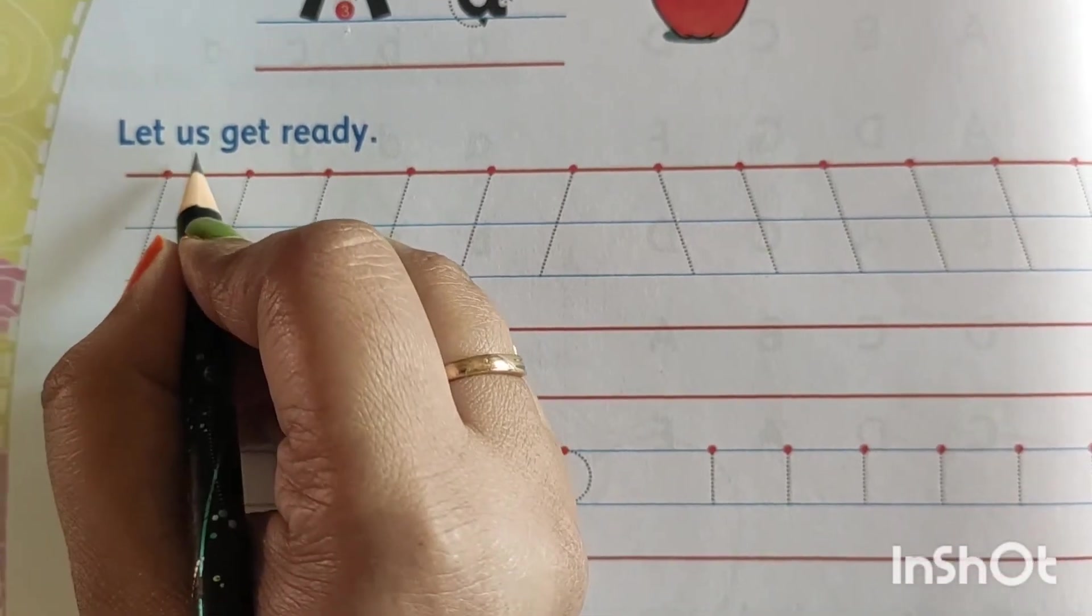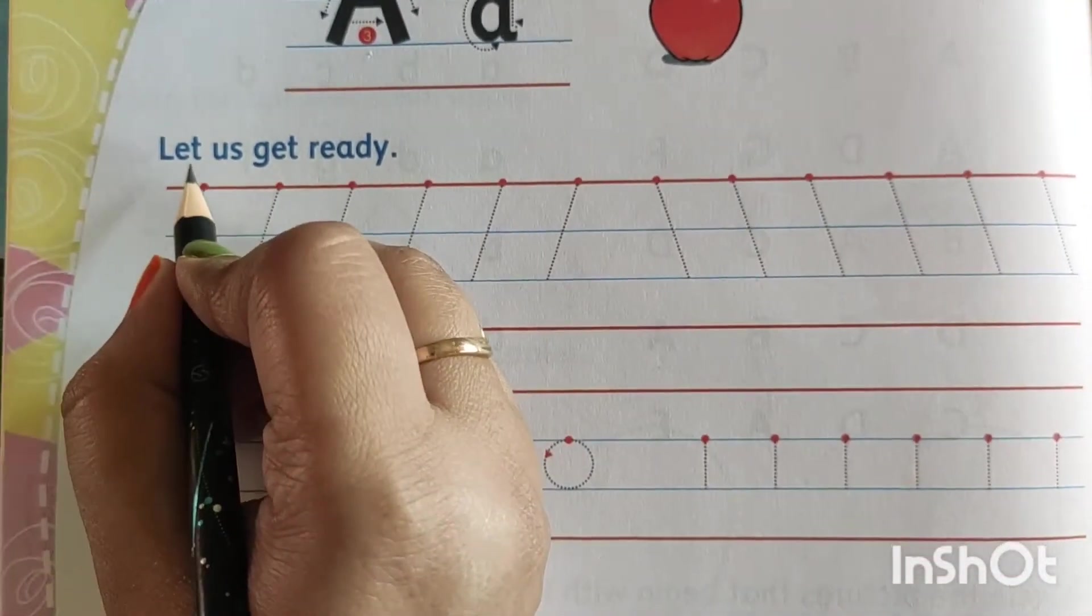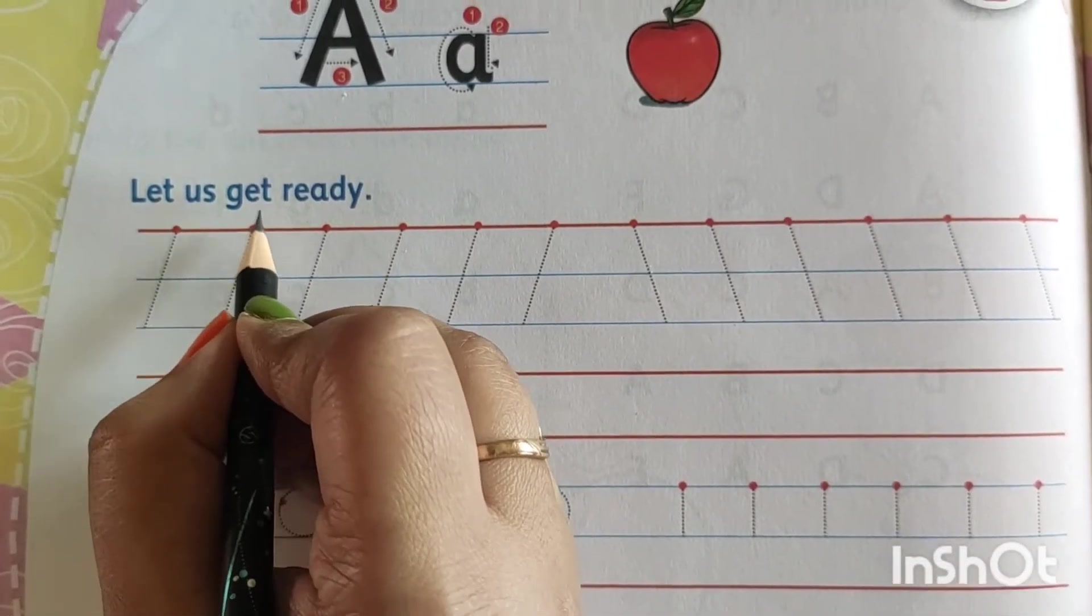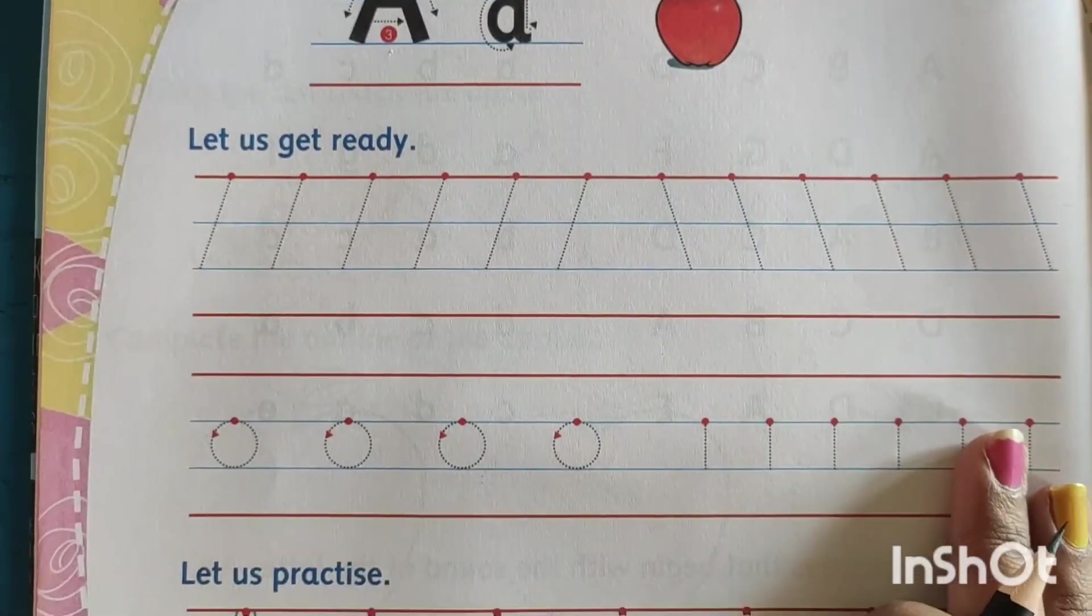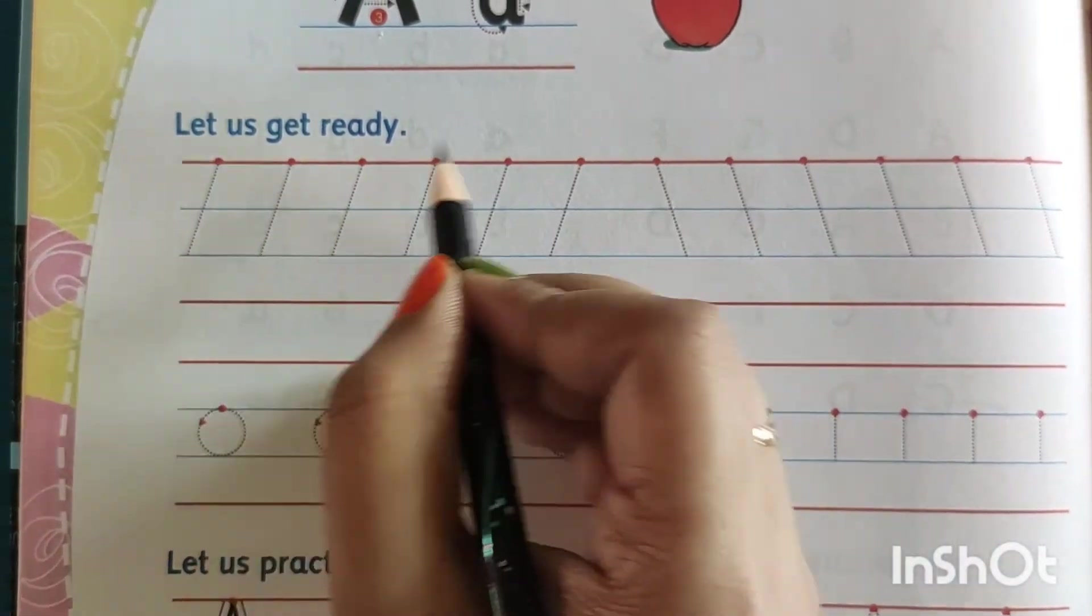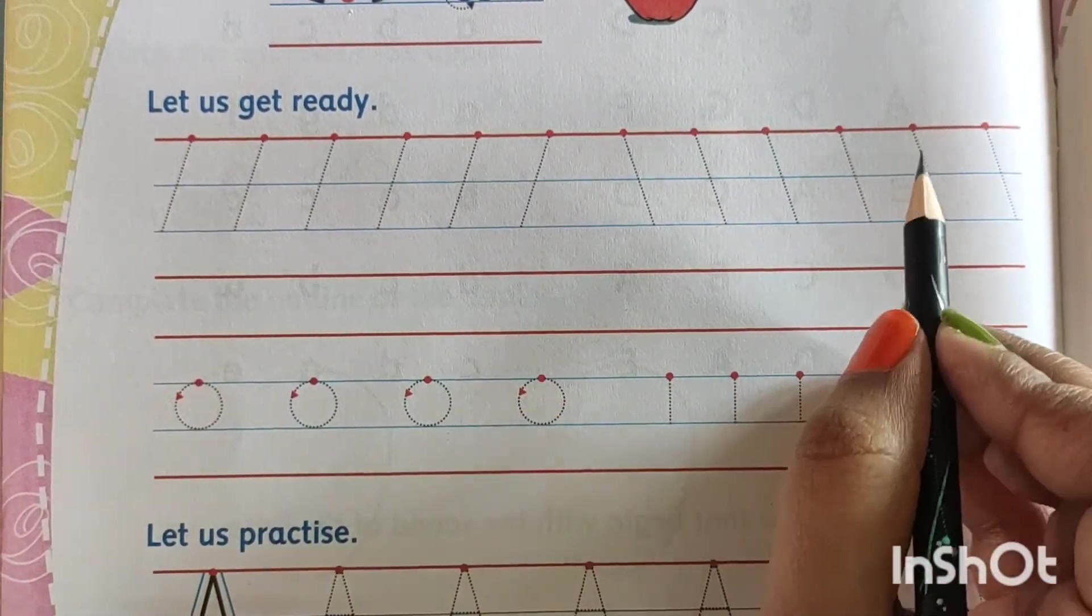So let us get ready. L-E-T let, U-S us, get G-E-T get, ready R-E-A-D-Y. We have to draw slanting line here and another opposite slanting line.